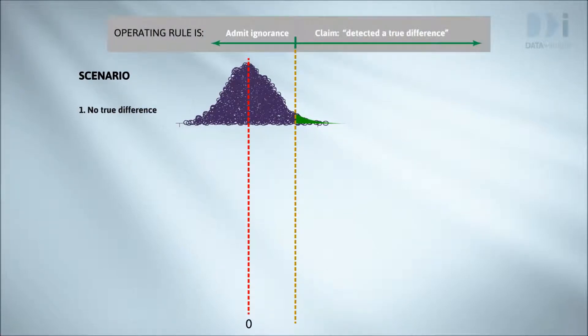Statisticians call this making a type one error and take comfort in the fact that it really happens. It's the cost of doing business in this way.